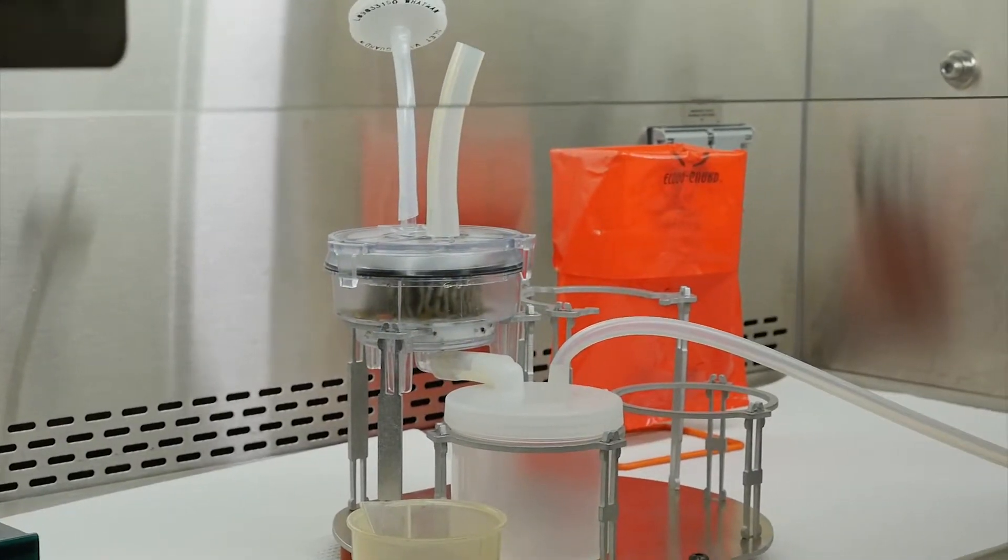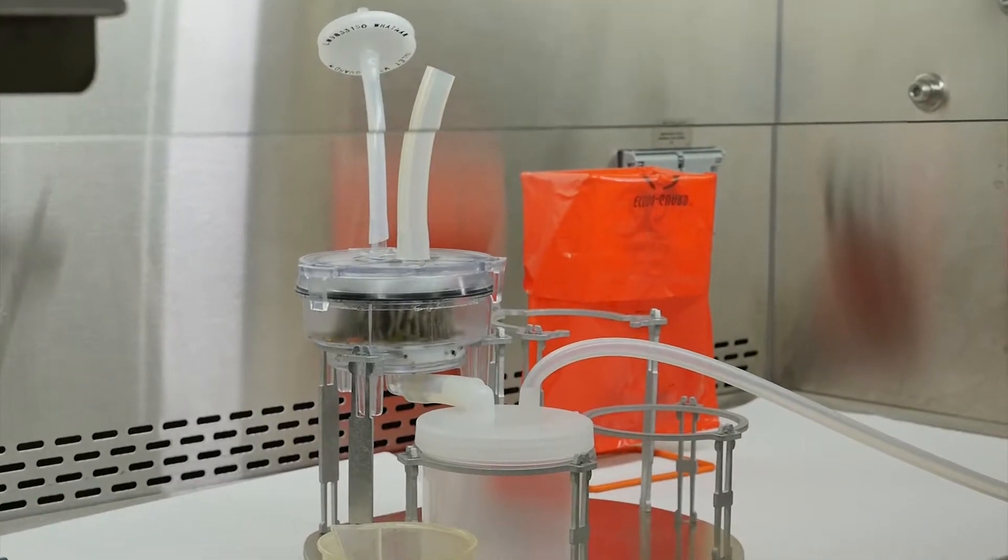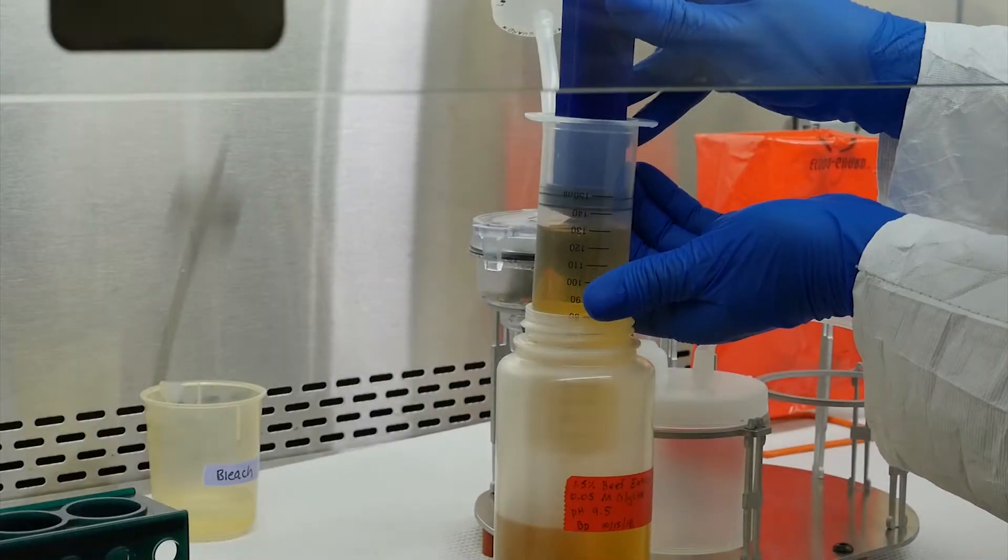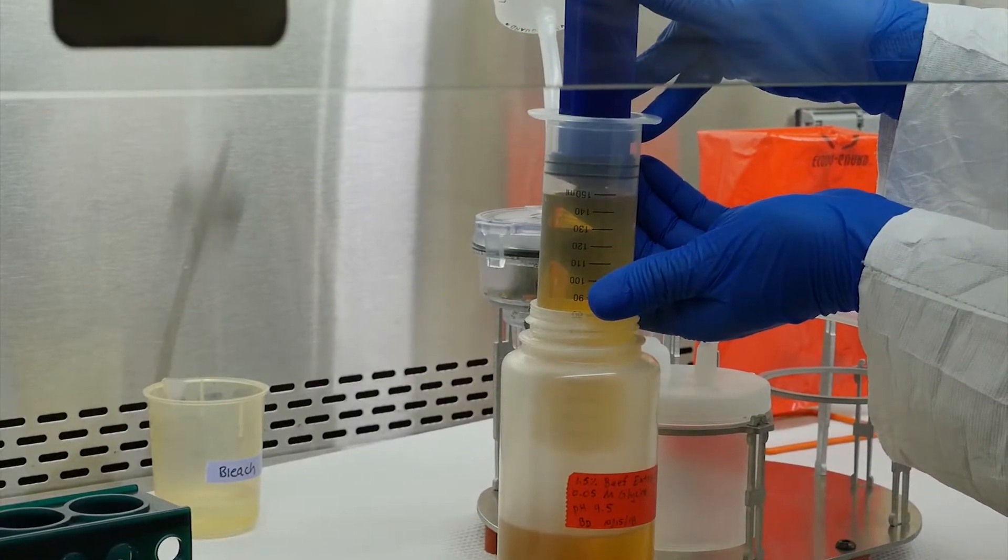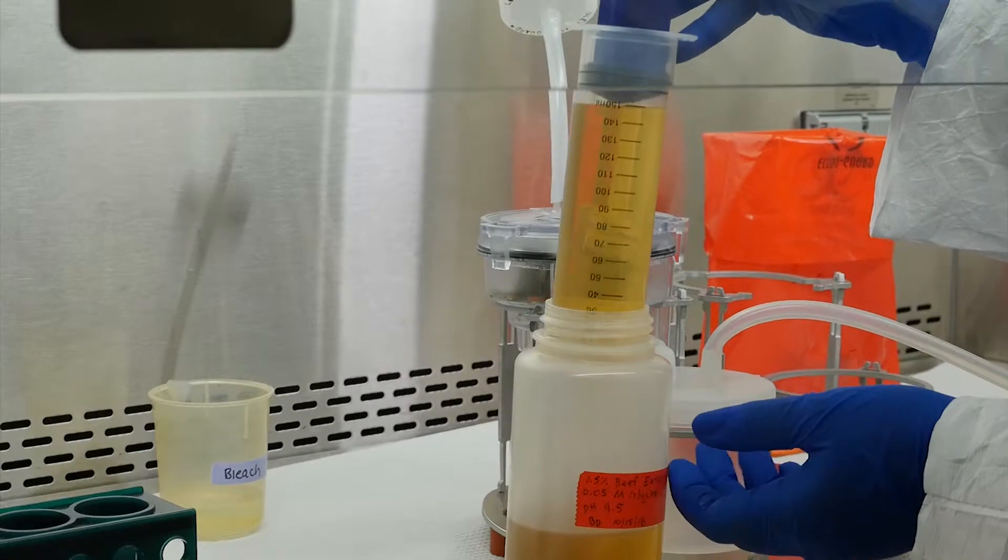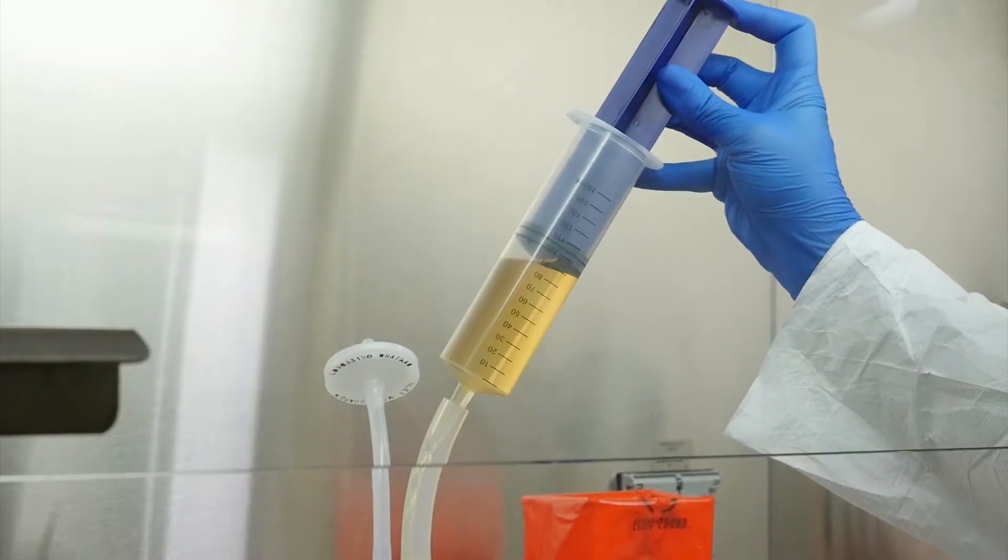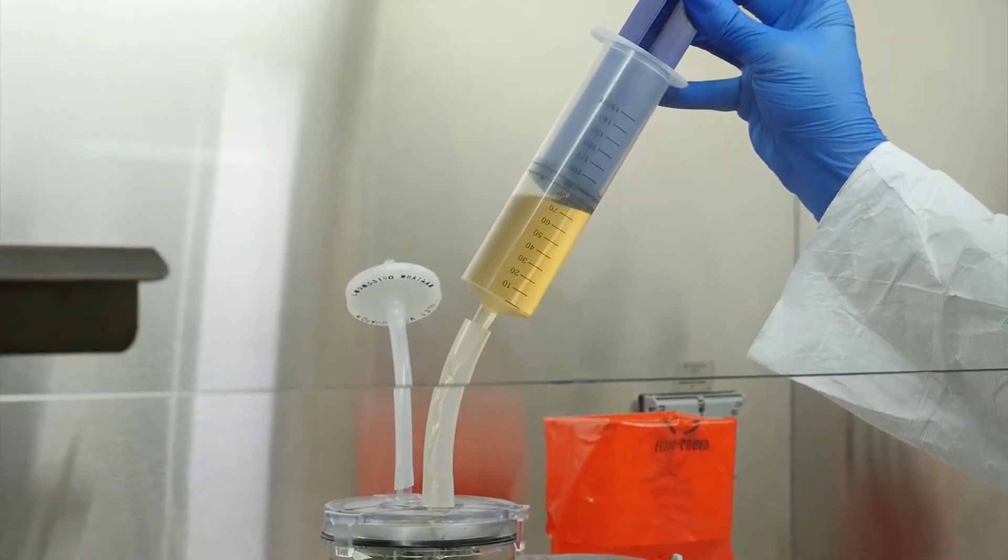Your setup should look like this, and you are now ready to elute your sample. Suction 150 milliliters of beef extract eluent into the syringe, making sure there are no air bubbles. Slowly inject the eluent through the injection tubing.